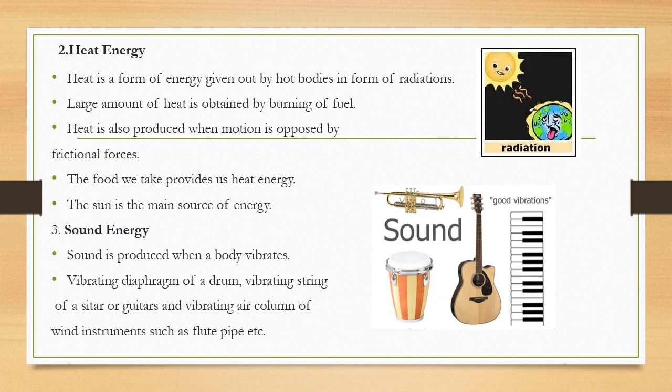A large amount of heat is obtained by burning fuel. Heat is also produced when motion is opposed by frictional forces. For example, when you apply brakes on a motorbike or car, the tires become hot. Similarly, traveling at high speed causes friction between the tires and the road surface, making the tires hot. So heat is also produced when motion is opposed by frictional forces — whenever there is movement, there is friction as an opposing force.